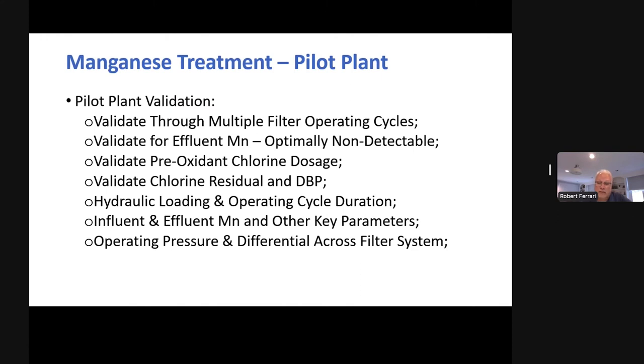We have to validate the effluent manganese. We validate the chlorine dosage, the residual, the disinfection byproducts, the hydraulic loading. The media can perform differently with different hydraulic loading rates, which is a key factor. Cycle duration is a whole range of parameters and also operating pressures and differential pressure across the filters. That's another key operating variable that can impact turbidity. So we need to assess that also. And I also like to stress that this is a very transparent process. Ultimately, everything submitted to MassDEP is public record information. This will be a very transparent process by both it's appropriate and it's necessary.